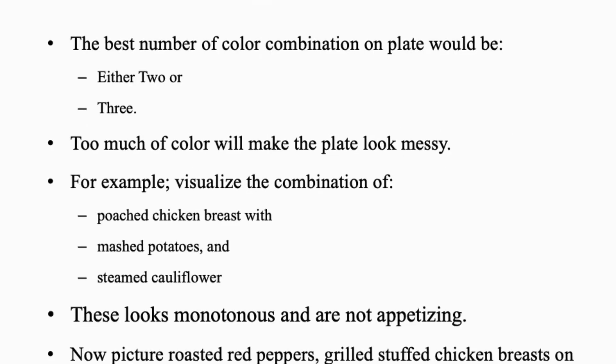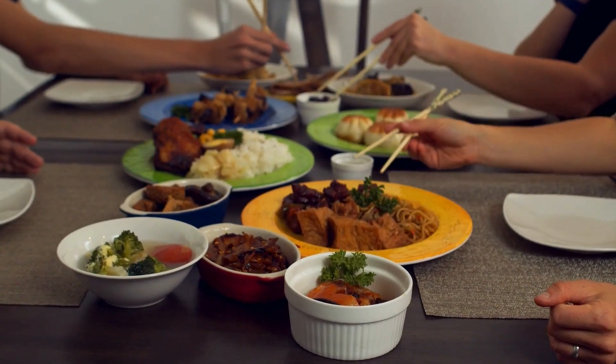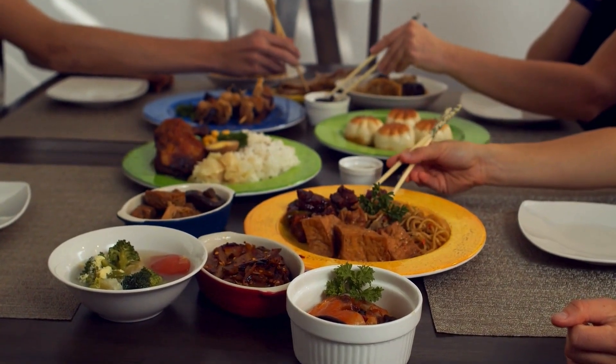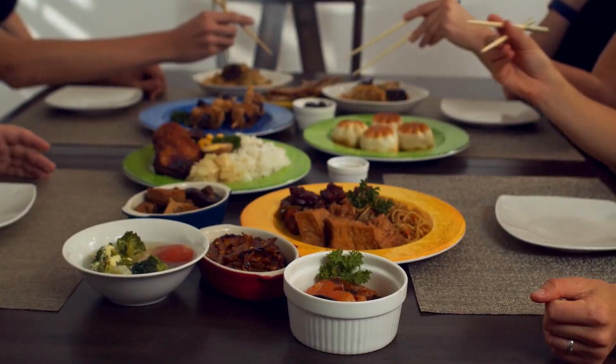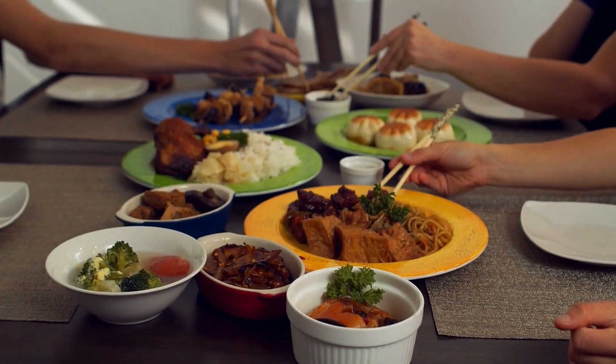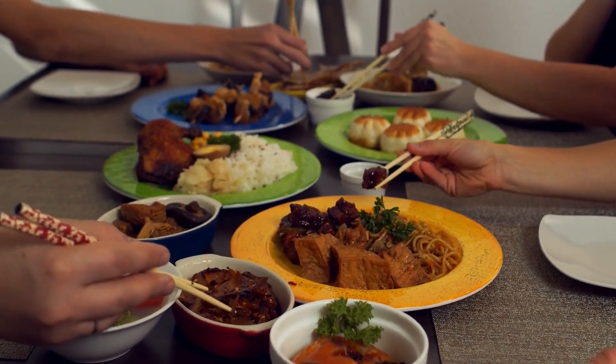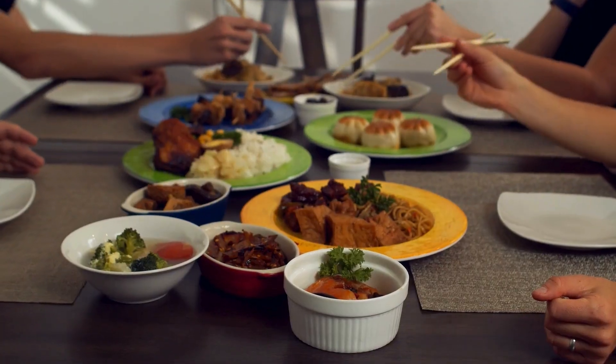Let's talk about the remaining elements of food presentation. Let's understand the element of color. The best number of color combinations on a plate would be either two colors or three colors. Too much color will make the plate look messy. For example, let's visualize the combination of pork chicken breast with mashed potato and steamed cauliflower.